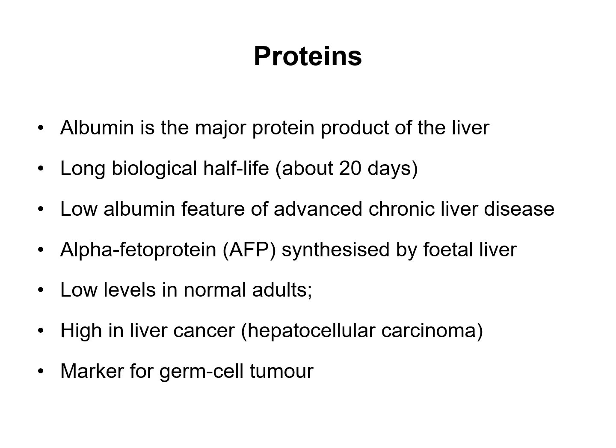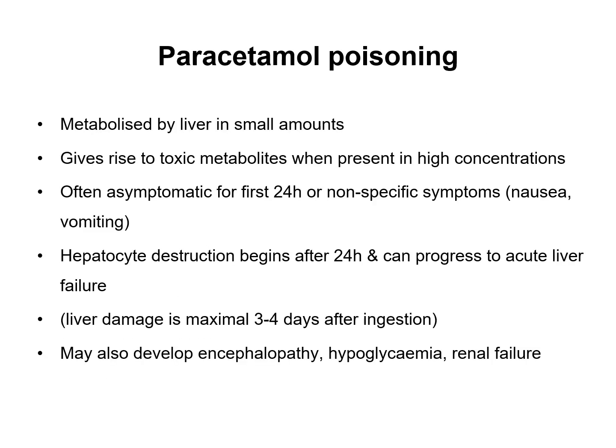Looking at proteins associated with the liver: albumin is a major protein product of the liver with a long biological half-life of approximately 20 days, and low albumin is a feature of advanced chronic liver disease. Alpha-fetoprotein is synthesized by the fetal liver and present at low levels in normal adults. High levels occur in liver cancer — hepatocellular carcinoma — and it is also a marker for germ cell tumours.